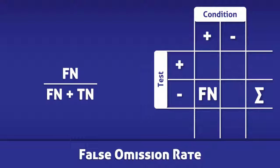Once more, the false emission rate is calculated by dividing the number of false negatives by the total number of negative tests.